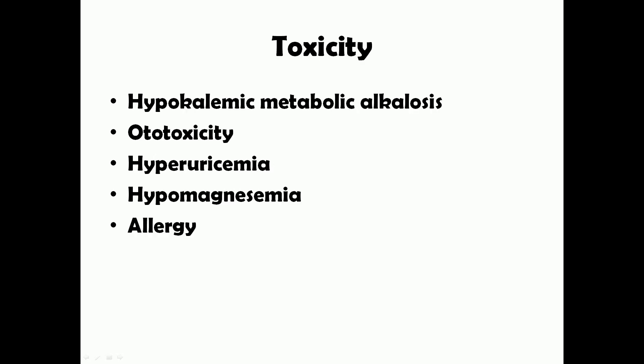The toxicity of loop diuretics is based on their mechanism of action. They facilitate excretion of sodium, potassium, and chloride, so potassium levels in the blood decrease, leading to hypokalemia. There is also a decrease in acid levels in the blood, leading to metabolic alkalosis — together producing hypokalemic metabolic alkalosis.